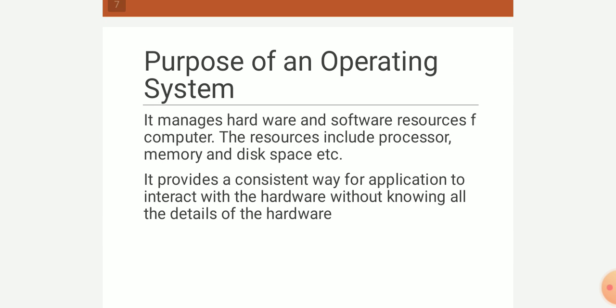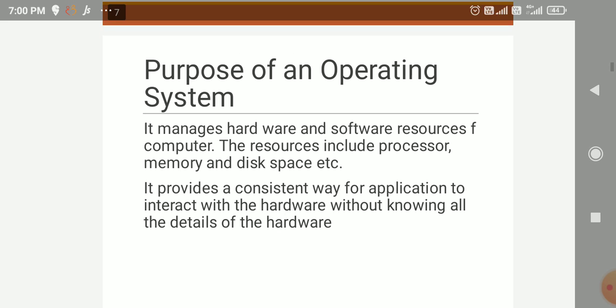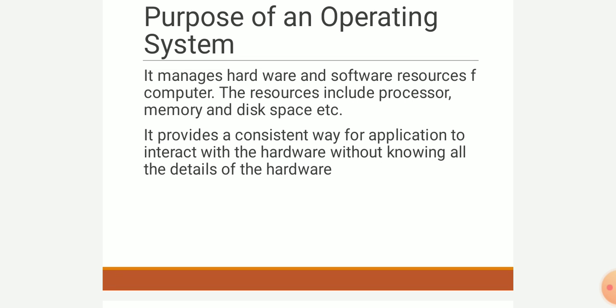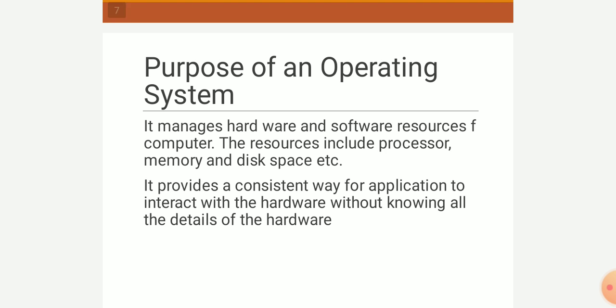Why do we use an operating system? What is the purpose or objective of using an operating system? It manages hardware and software resources of the computer — resources include processor, memory, disk space, etc. It provides a consistent way for applications to interact with hardware without knowing the details of the hardware. Basically, the operating system coordinates things and provides proper functionality and services for easy work.